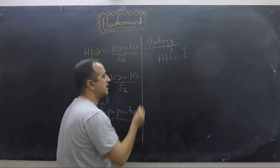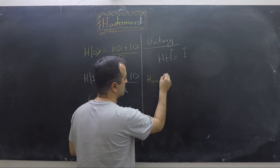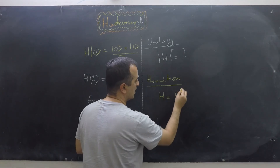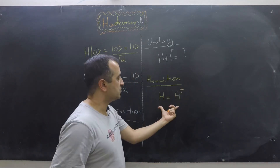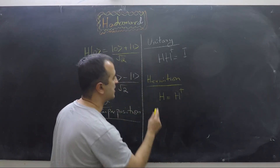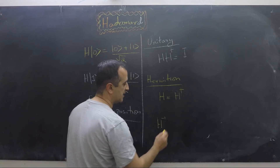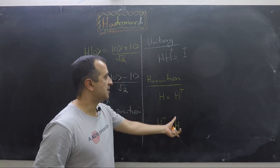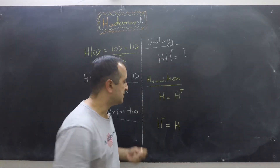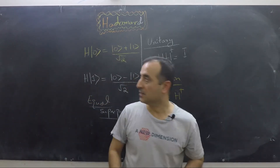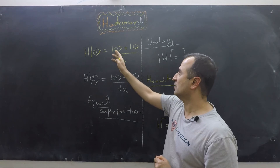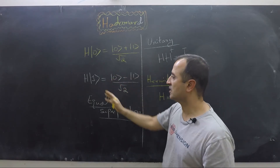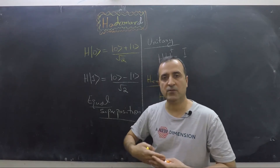Another property is that the Hadamard gate is also Hermitian, which means H = H†. Combining the unitary property (H⁻¹ = H†) with the Hermitian property (H = H†), we get that the inverse of the Hadamard gate is the Hadamard gate itself. So H is its own inverse. If this is correct, then applying H on equal superposition of |0⟩ and |1⟩ should recover the original state.